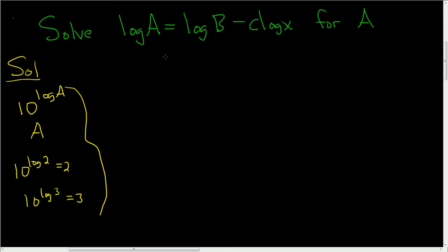So if we do that though, we're going to have this nasty term on the right hand side. So maybe it's a good idea to first clean up the right hand side. So this will be log b minus log of x to the c. We use the power rule to bring the c upstairs.